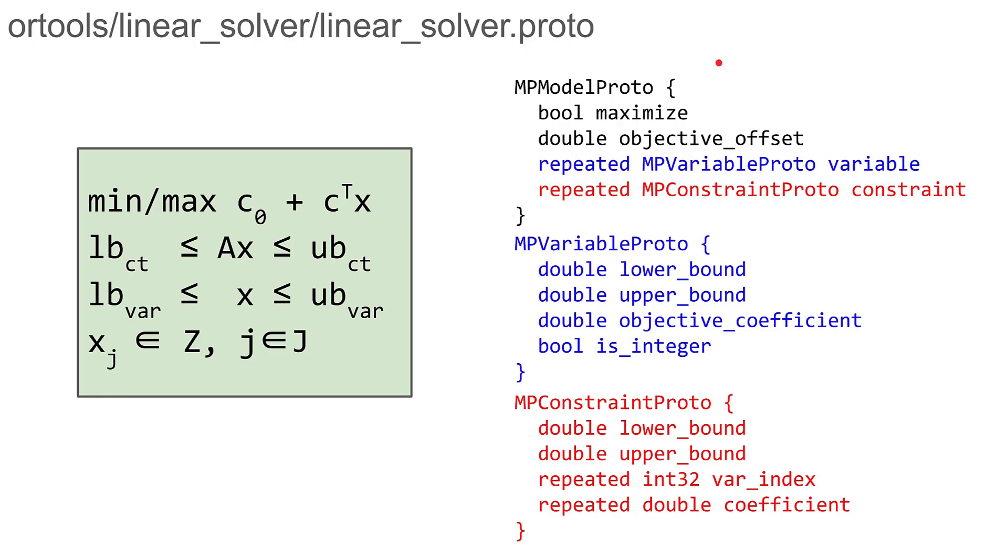You have a high level model proto that contains information on the objective direction and offset, and then just a list of variables and constraints where each variable and constraint is a proto itself. The variable proto defines a single variable with its bounds, objective coefficients, and indication whether it's integer. The bounds can be infinite, so it doesn't have to be boxed. Similarly, for constraints you have a proto that defines the bounds and a list of variables by index and corresponding coefficients involved in this constraint.